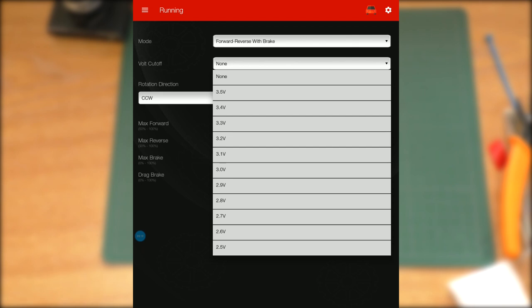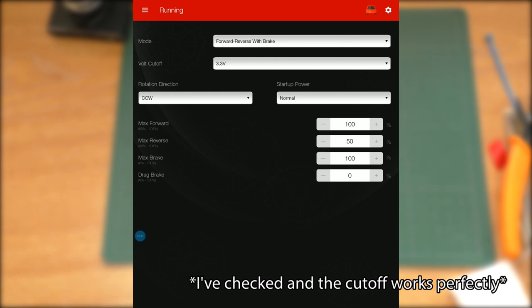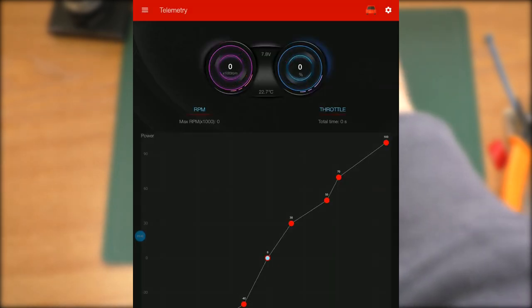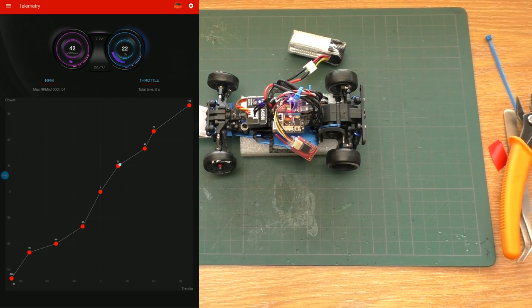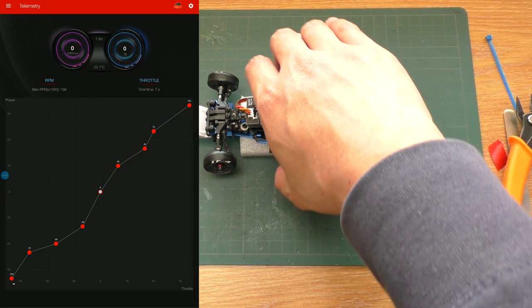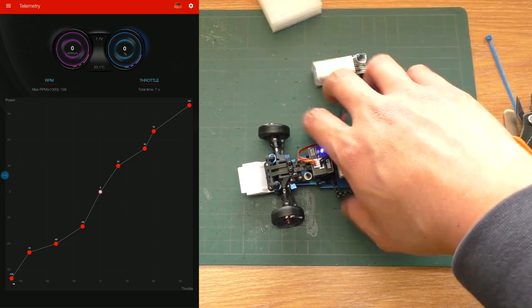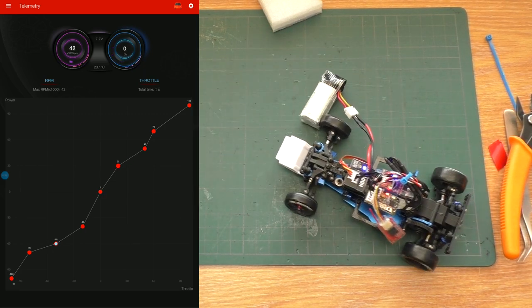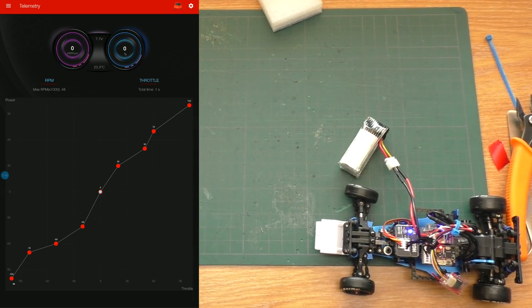And of course, because we are using the LiPo battery, we're going to have to set the cutoff voltage. For safety, let's put it on 3.3 volts per cell, which is going to cut when the battery is down to 6.6 volts, because it is 2 cells. Here we can set the max forward speed, max reverse speed, brake, and drag brake. And then we can go to the telemetry and see how it works. Now let's see it on the floor. And it is working perfectly.